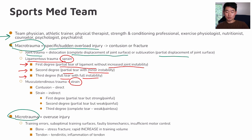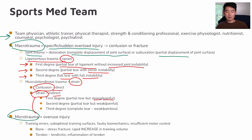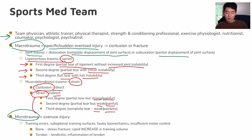Looking at muscle strain: there are direct strains, called contusions, and indirect strains, just called strains. There are three degrees here as well. First degree is a partial tear but you can still activate the muscle — it's still strong with a little bit of pain. Second degree is weak and painful. Third degree is weak with no pain, because it's a complete tear of that muscle.